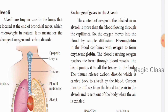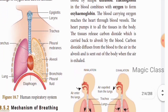The hemoglobin in the blood combines with oxygen to form oxyhemoglobin, which reaches the heart. The heart then pumps it through blood vessels to all the tissues in the body. The tissues release carbon dioxide, which is carried back by the blood to the alveoli. Carbon dioxide diffuses from the blood into the air in the alveoli and is sent out of the body when exhaled.